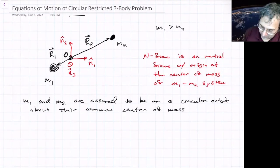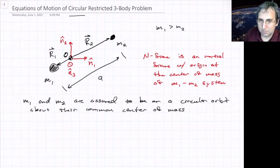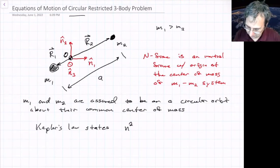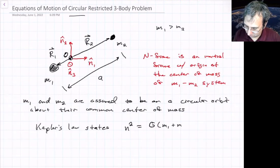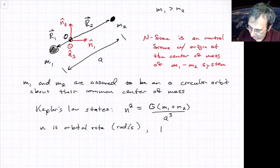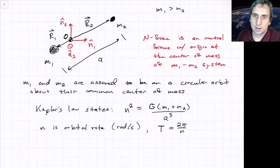That helps us — we know some things given that. Based on Kepler's law, if the distance between the two primaries is the semi-major axis A, then Kepler's law states that the angular speed squared equals G times M1 plus M2 over A cubed. N is the orbital rate in radians per second, and the period is 2π over N. So we know the rate at which they're rotating around.